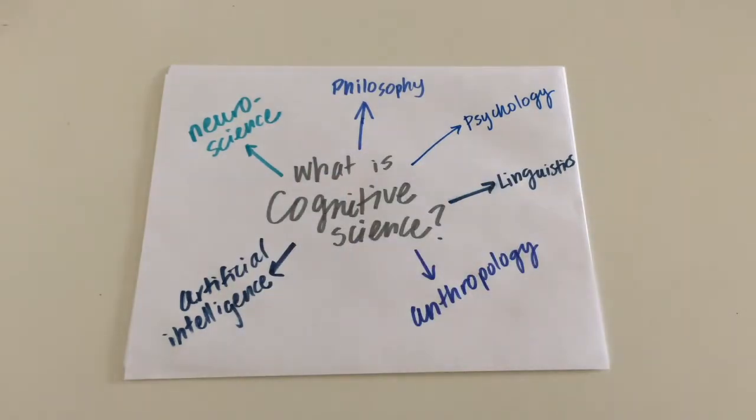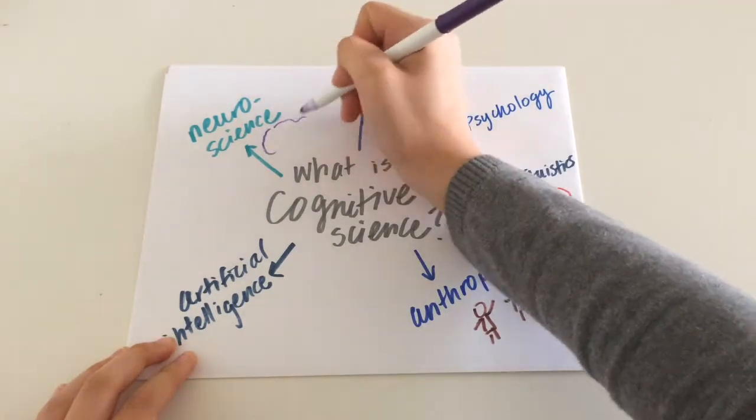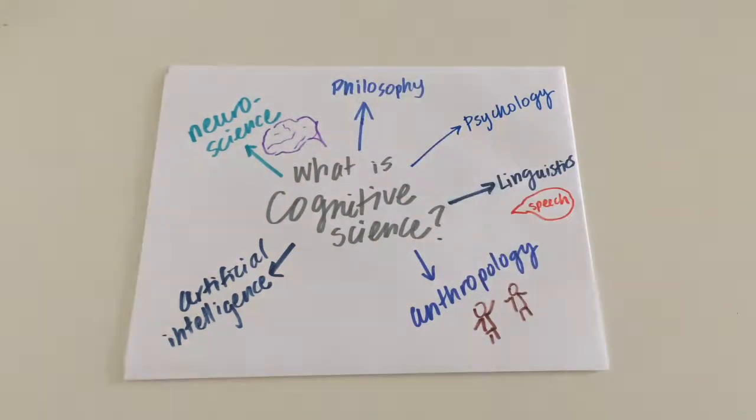Each subfield of cognitive science aims to answer different questions about the mind, like how does culture and shared knowledge influence the way people interact with and perceive the world around them?